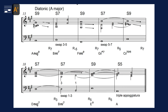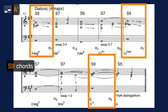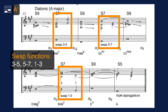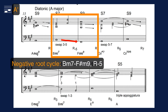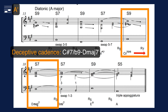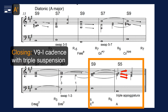The closing section returns to diatonic harmony with three 9 chords. We observe three cases of swapping adjacent chordal functions for improved voice leading. There is one negative root cycle R minus 5 connecting two minor chords — note this characteristic unbalancing aural effect. There is a deceptive cadence V7 to flat 6 major in F sharp minor, before the example closes with a 2-5-1 cadence with a triple suspension voice leading.